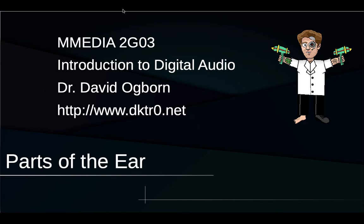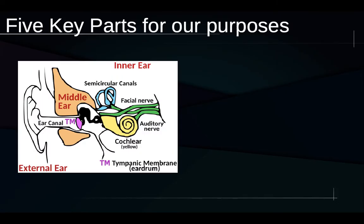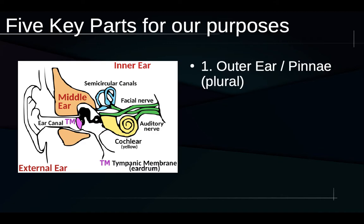In this video we're going to talk about the parts of the ear, particularly in connection with the physiology of the ear and its connection to frequency, the spectrum, and filters. Here's a Creative Commons zero diagram of the ear that I found on the internet, and I'm going to use that to structure this discussion. There are going to be five key parts for the purposes of our discussion.